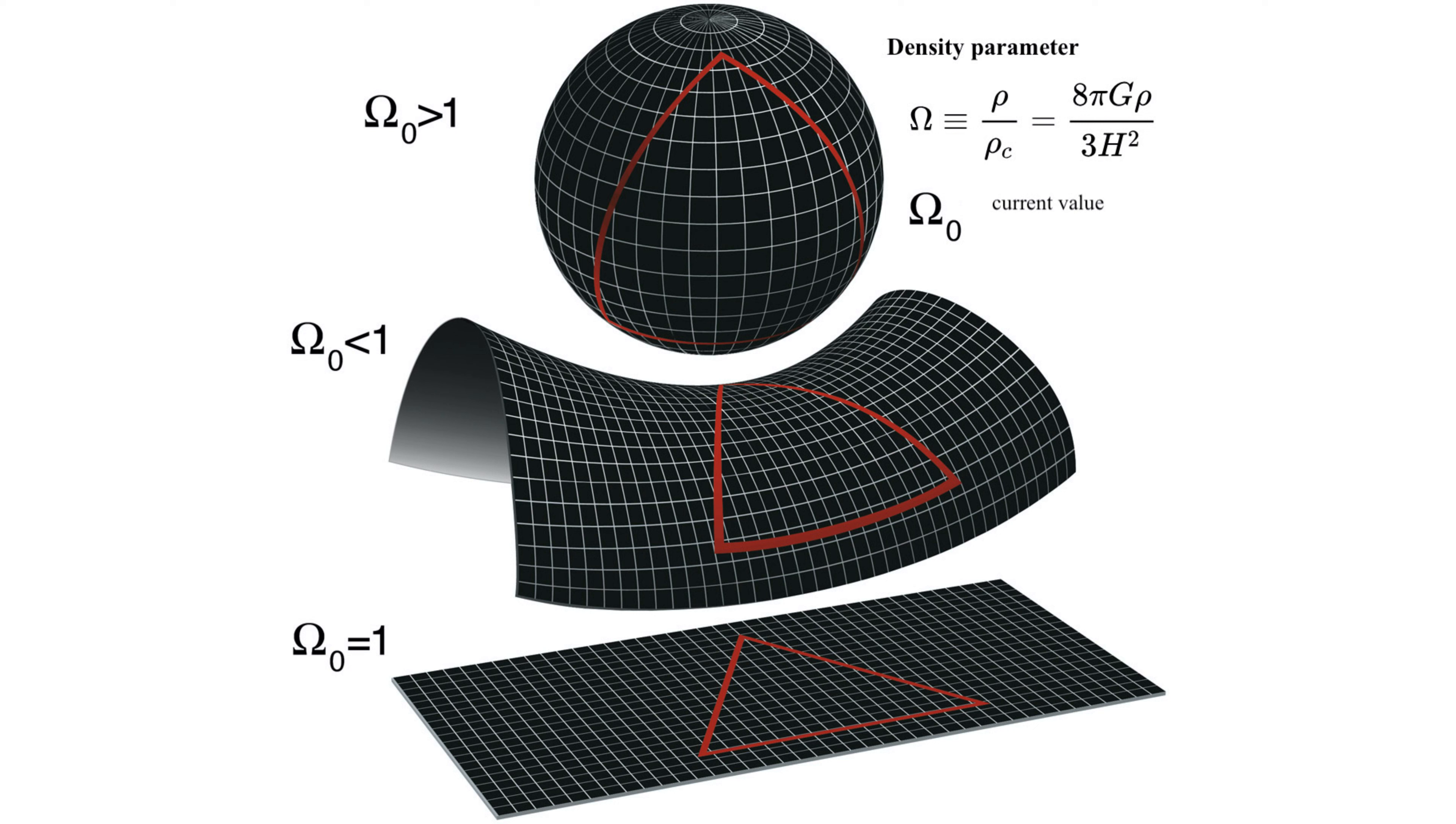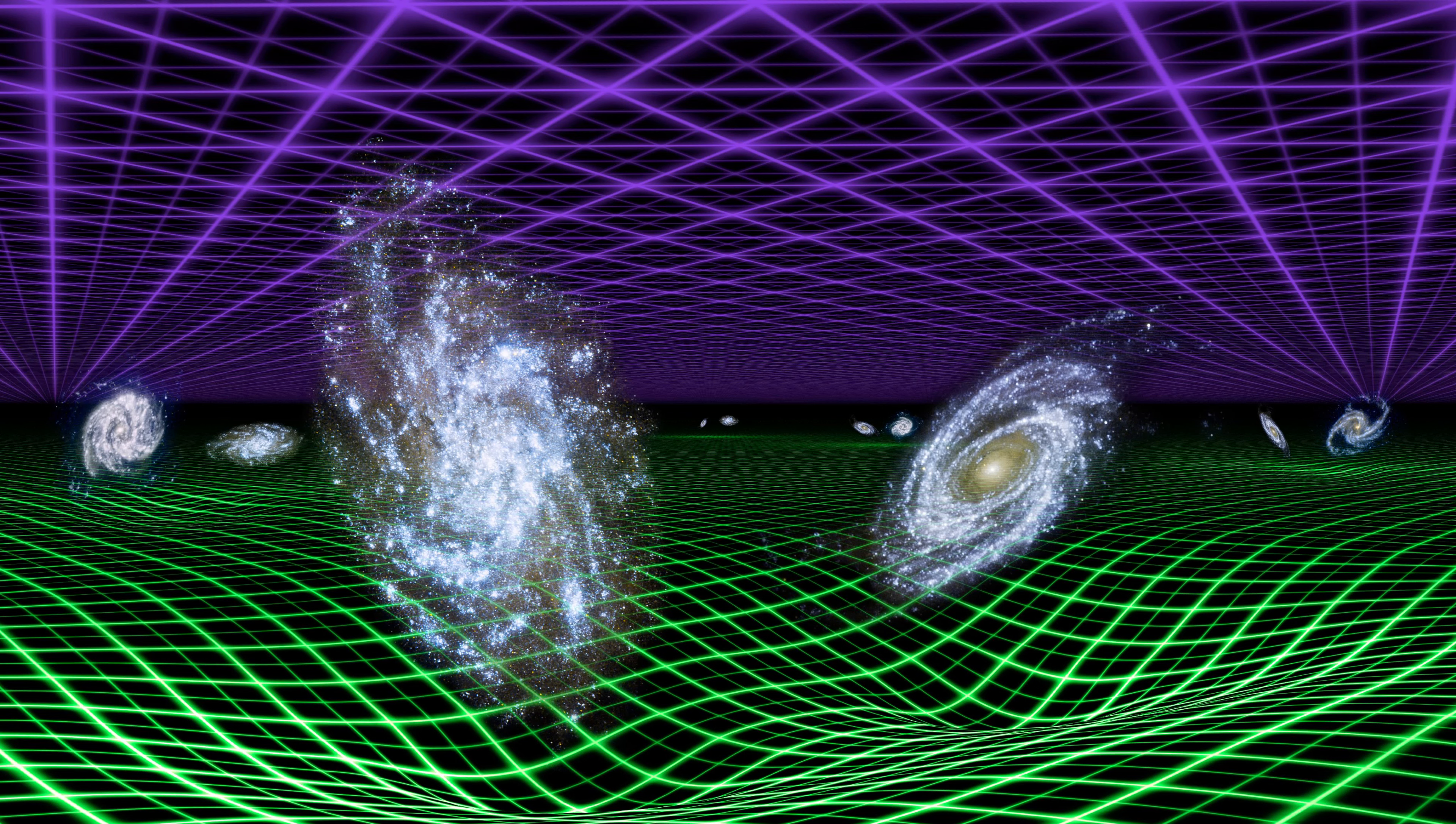The flatness problem is a key puzzle in cosmology revolving around the density of matter and energy in the universe. This density plays a crucial role in determining the overall curvature of space-time. Imagine space-time as a vast fabric and matter and energy as the weight that bend and shape this fabric. If there is too much matter and energy, space-time will curve inward, leading to a closed universe like the surface of a sphere.